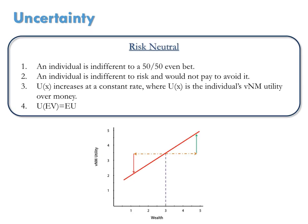If you instead said that you were indifferent between options 1 and 2, you are risk-neutral. An individual who is risk-neutral is indifferent to a 50-50 even bet. Yet, risk-neutral people are indifferent to risk and so won't pay to avoid it. Their VNM utility increases with wealth at a constant rate. And the utility they get from the expected value of a lottery equals the expected utility of the lottery itself.